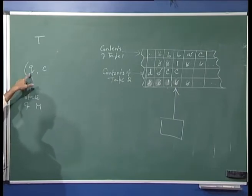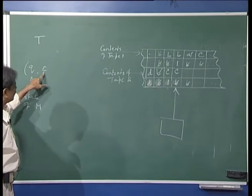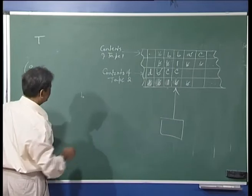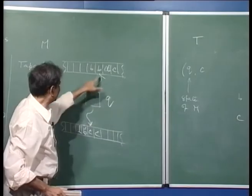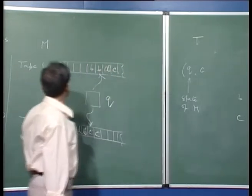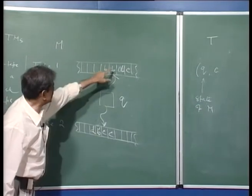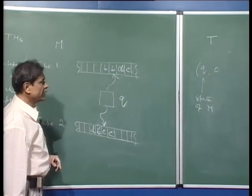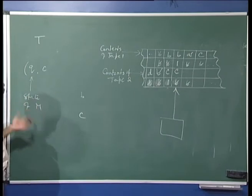Now T knows: machine M is in state Q, scanning B on tape 1 and C on tape 2. This information is enough for T to determine M's next state, and what symbols will update the current symbols on both tapes. For example, if in state Q reading B on tape 1 and C on tape 2, M would update B to D, C to E, move tape 1's head right, and tape 2's head left, transitioning to state Q prime.